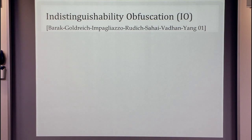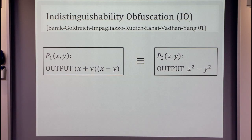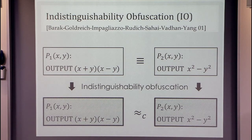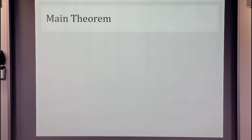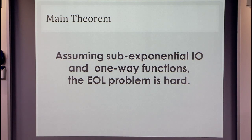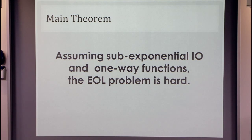Instead, what we're going to do today is show the hardness of End-of-the-Line based on indistinguishability obfuscation — a much weaker and more believable notion of obfuscation. As a reminder, indistinguishability obfuscation lets us take any two equivalent programs and turn them into obfuscated programs that are computationally indistinguishable. Our main theorem says that assuming indistinguishability obfuscation with sub-exponential security and one-way functions, the End-of-the-Line problem is hard. We can even show it is sub-exponentially hard, and we also construct an explicit hard distribution over End-of-the-Line instances.